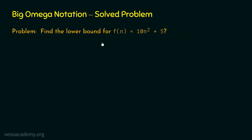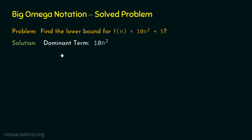Now let's solve the problem. First, we need to find the dominant term in Fn. Here we can observe that 10n² is clearly the dominant term, because even for n equal to 1, this value is greater than 5. Here we get 10 and there we have 5 — 10 is greater than 5. So for all n greater than or equal to 1, 10n² is the dominant term. For Step 2, we assume Gn based on the dominant term. We can eliminate the constant 10 and we are left with n², so Gn equals n².